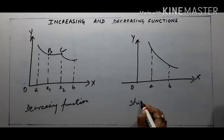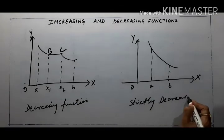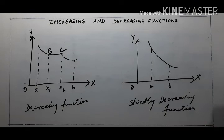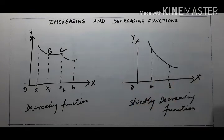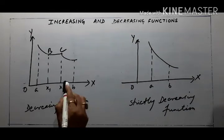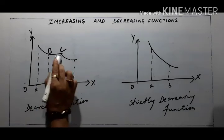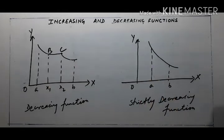Now strictly decreasing function: as x increases, y decreases — continuously. The interval here is equal to the decreasing function. But when it is strictly decreasing, it will continuously decrease without any flat portion.